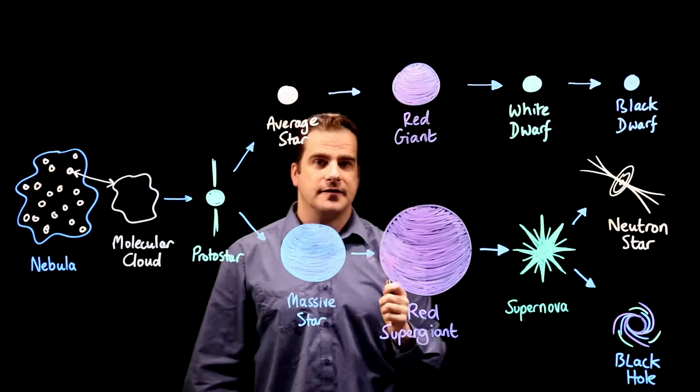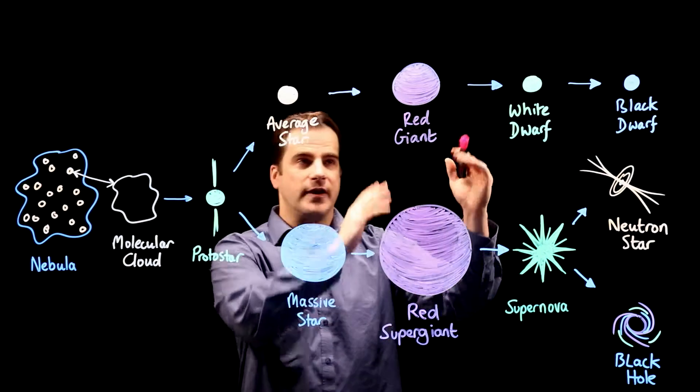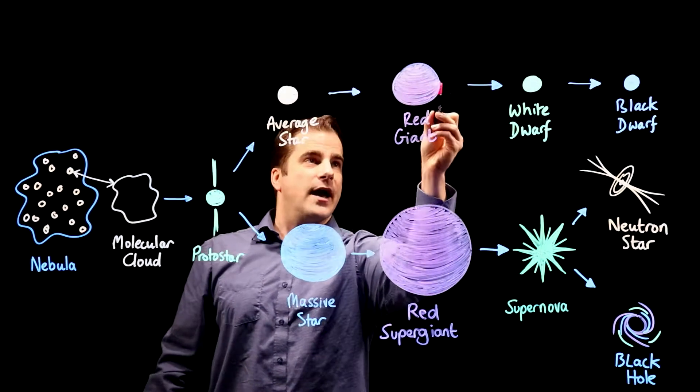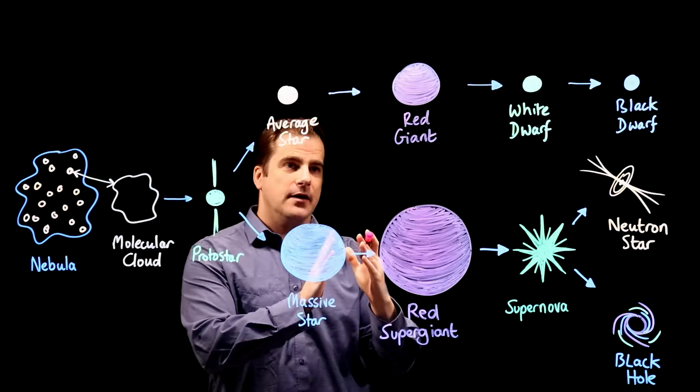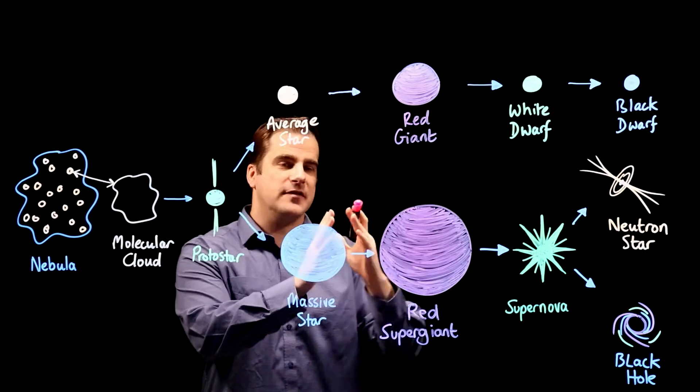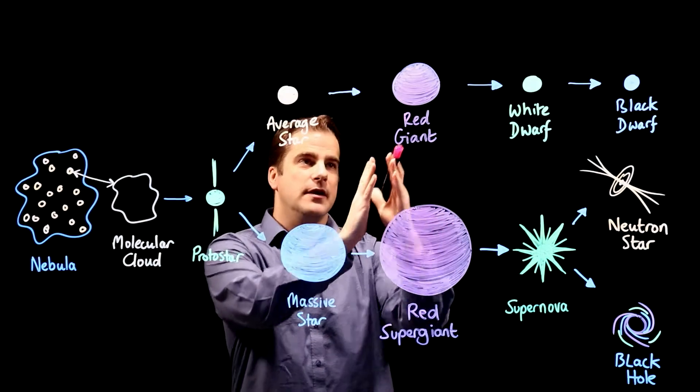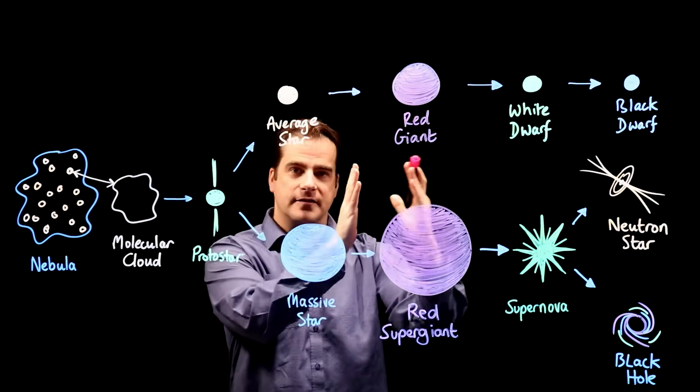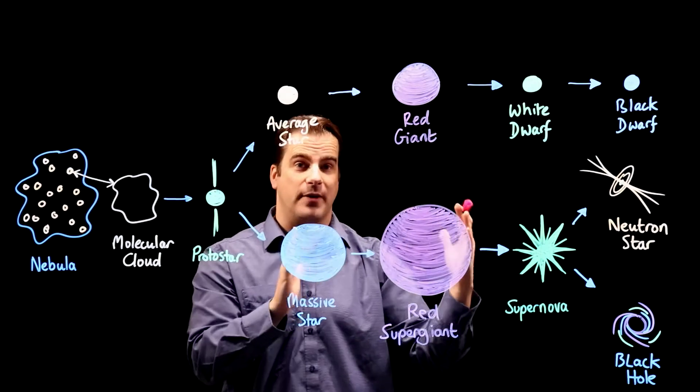Now when our Sun does this in about 4 billion years, its radius will increase to the point where the outer limit of the star will be about where planet Earth is. So somewhere between Venus and Earth, they think. So it's possible that as the Sun expands in 4 billion years to become a red giant it will actually engulf planet Earth.